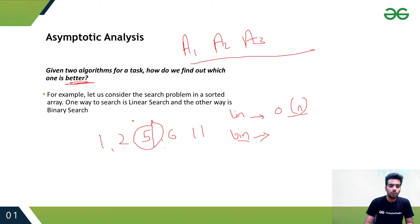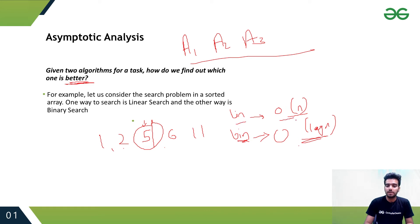Binary search divides the array into two parts and checks whether the middle element is the target or not, and it takes O(log n) time. So we can say the time complexity of binary search is less than that of linear search. This is how asymptotic analysis helps us find which algorithm is better — binary search is better for a sorted array.